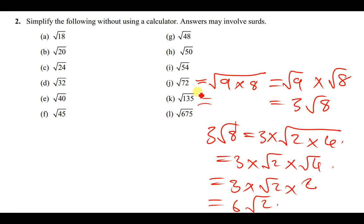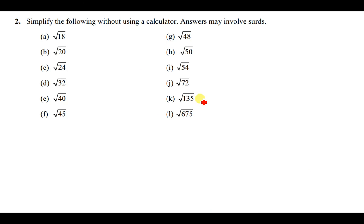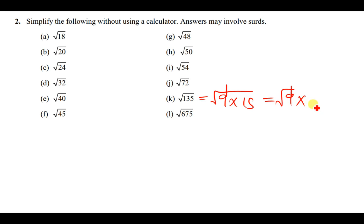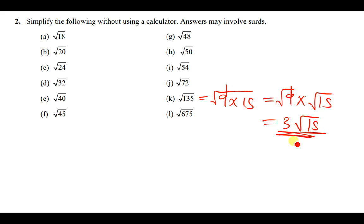For √135: we find a perfect square that can go into 135, which is 9. So this can be written as 9 times 15, which is just the same as the square root of 9 times the square root of 15, giving us 3√15. Note that 15 can also be written as 3 times 5, but there is no other way to simplify this further, so the final answer is 3√15.